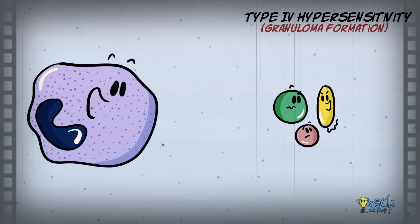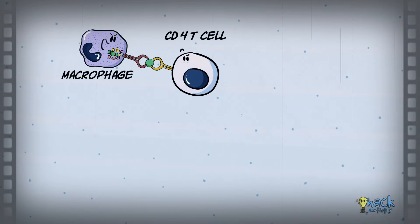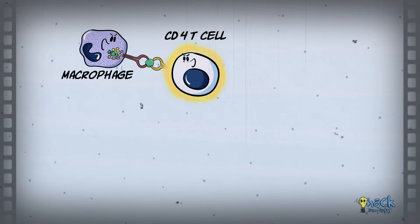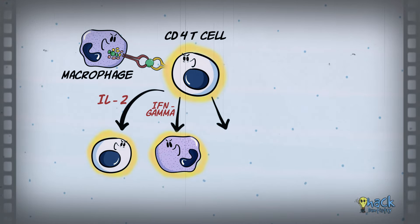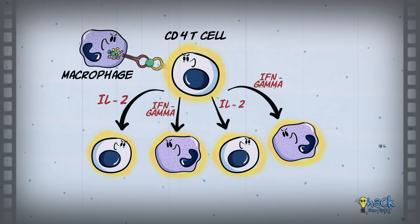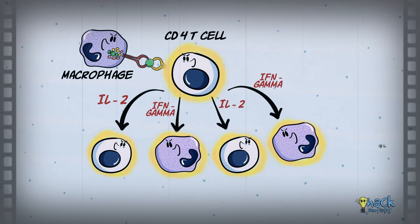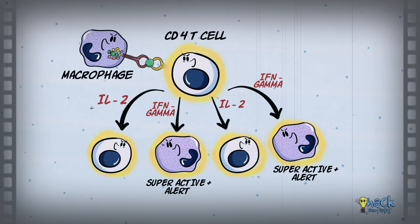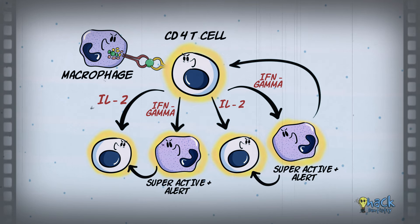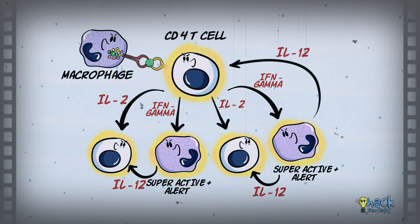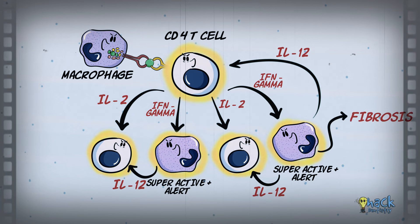In type 4 hypersensitivity responses, a macrophage engulfs foreign agents, presents it to a CD4 T lymphocyte, and activates the T cell in the process. The activated CD4 T cell further activates more CD4 T cells and macrophages through interleukin 2 and interferon gamma respectively. These activated macrophages become superactive and alert, engulfing more foreign agents and further activating more CD4 T cells by producing cytokines like interleukin 12. It also produces growth factors that stimulate fibrosis.